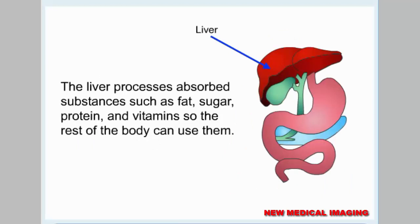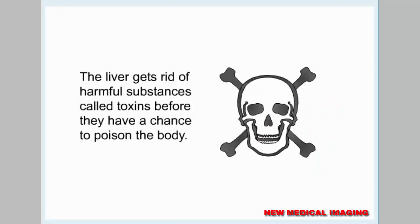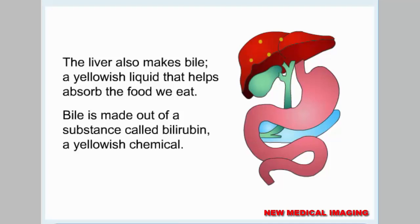The liver processes absorbed substances such as fat, sugar, protein, and vitamins so the rest of the body can use them. The liver gets rid of harmful substances called toxins before they have a chance to poison the body. The liver also makes bile, a yellowish liquid that helps absorb the food we eat.